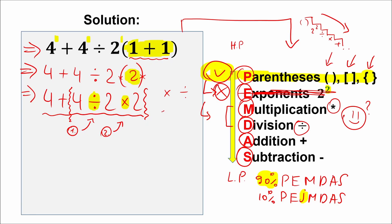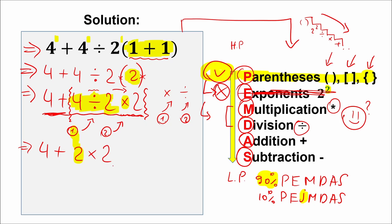So we do division first and multiplication second. We forget about the addition for now because division and multiplication have higher priority than addition and subtraction. Division first: 4 divided by 2 equals 2. We still have the multiplication. Second step: we multiply 2 times 2 to get 4. So we complete the multiplication and division part, giving us 4 plus 4.